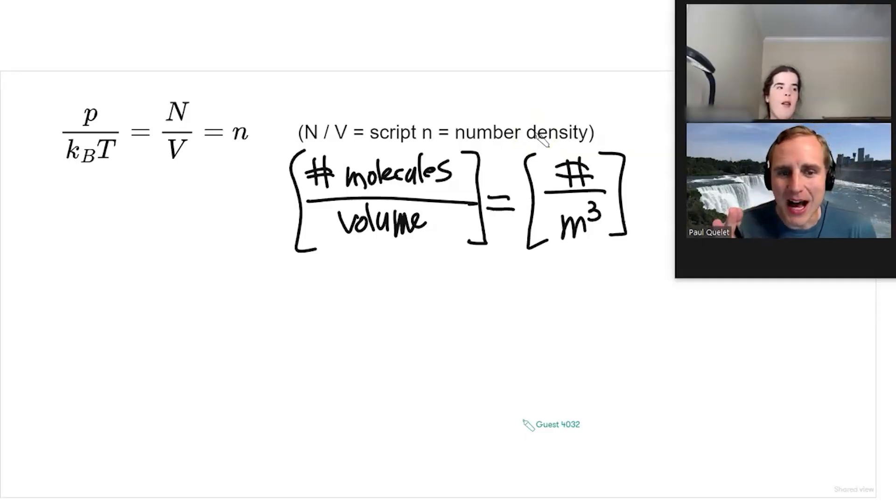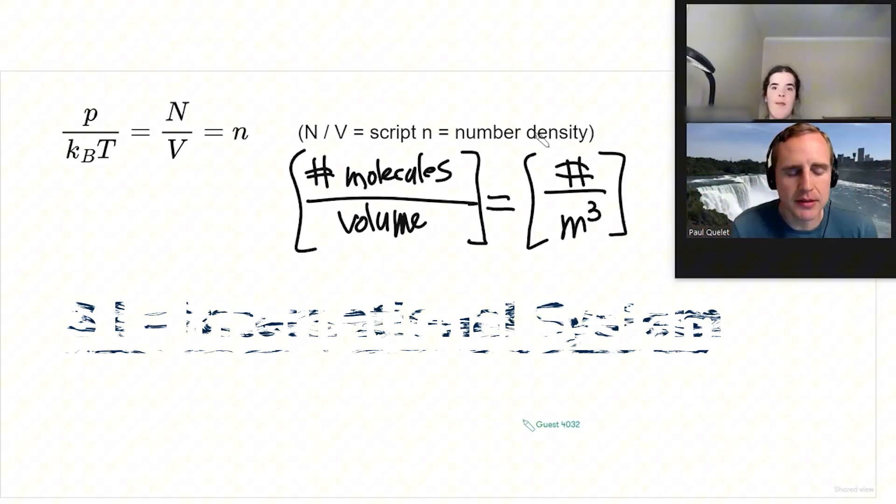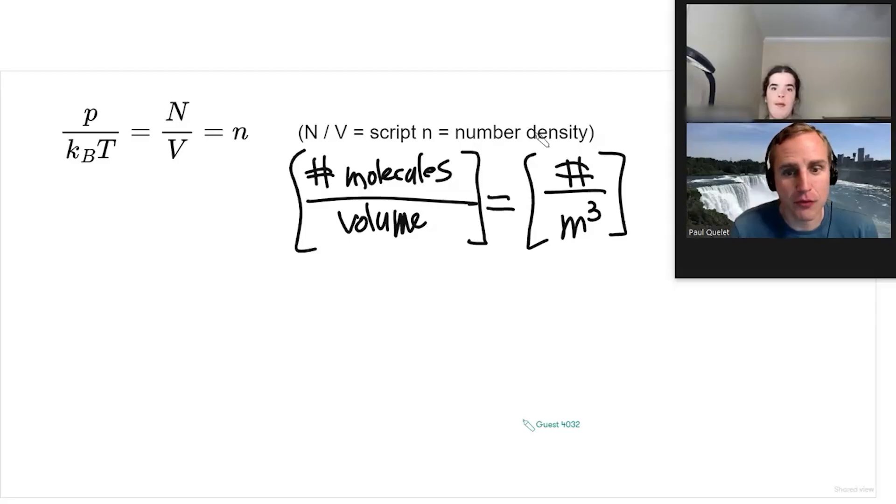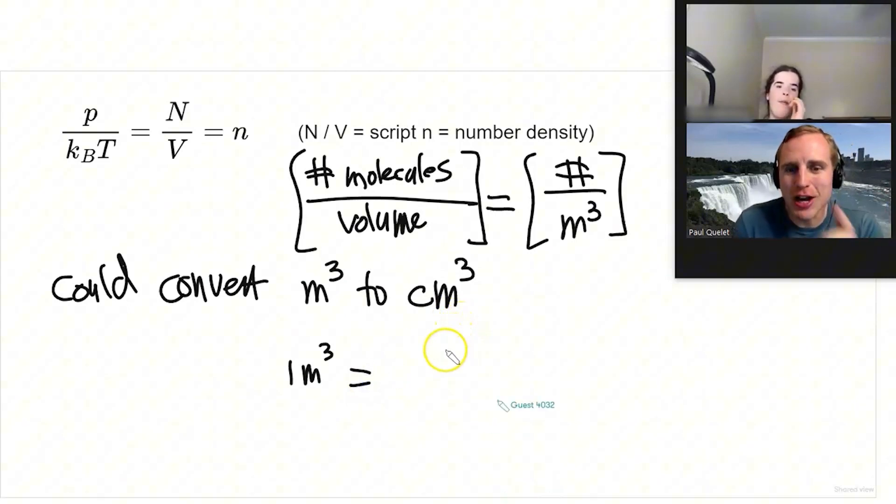The SI units—by SI I mean the international system where all the units divide out perfectly evenly—the standard system would be per cubic meter. You could convert meters cubed to centimeters cubed because we know that there's a hundred centimeters in every meter. So it's a hundred times a hundred times a hundred, which is 10 to the sixth cubic centimeters in a cubic meter.